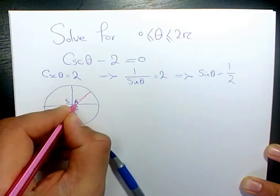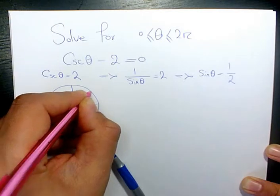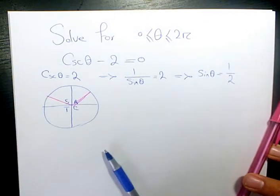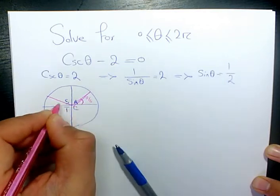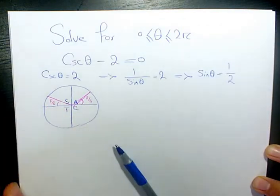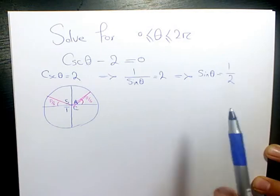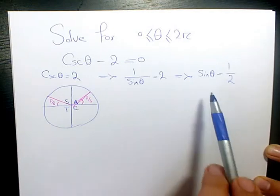A stands for all and S stands for sine, so sine is positive there. Here we have π over 6. Here we have π over 6. As you know, sine π over 6 based on the special angles, sine π over 6 is 1 over 2.